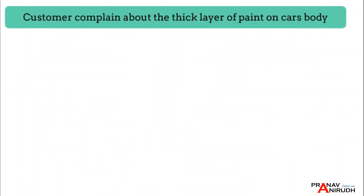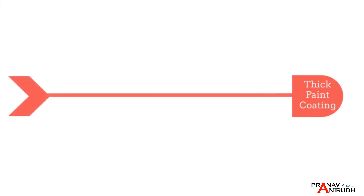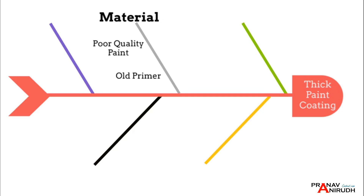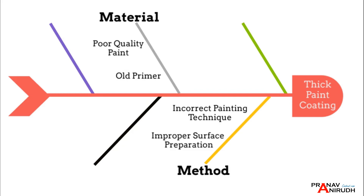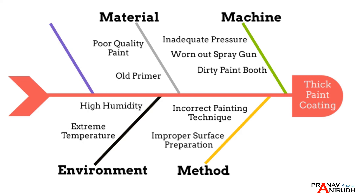Here is an example of an Ishikawa diagram for analyzing the root cause of a customer complaint about a thick layer of paint on a car's body. Starting with clearly defining the problem: paint coating is too thick. Draw a horizontal line representing the spine of a fish, then draw branches from the main spine to represent the main categories. In the Material category, consider poor quality paint or old primer. In the Method category, consider improper surface preparation or incorrect painting techniques. In the Machine category, it could be a dirty paint booth, worn-out spray gun, or inadequate pressure.